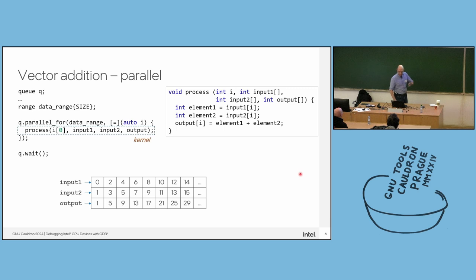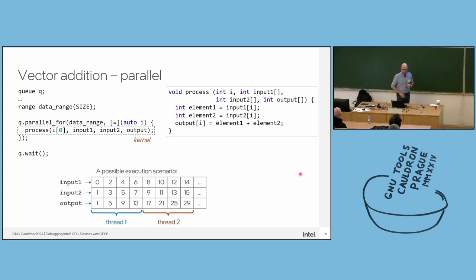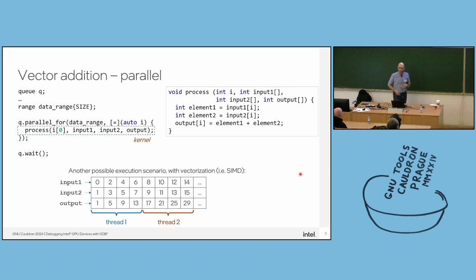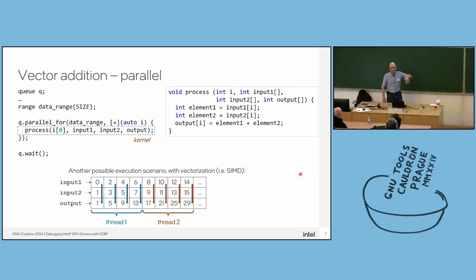What we have inside the lambda is usually called the kernel — not to be confused with the Linux kernel, but the computation kernel. A possible execution scenario is that the SYCL runtime splits the data — which is usually very large — into chunks, and assigns each chunk to a thread. One possible way is that the thread takes its assigned range and processes it sequentially. Or the data could be vectorized, and threads process data in parallel by means of vectorization. This is the single instruction, multiple data model — that's basically how GPUs work.